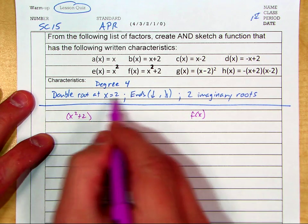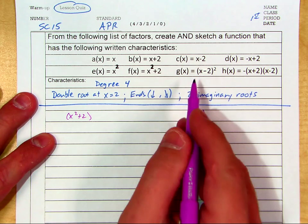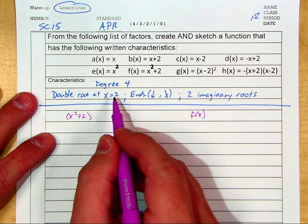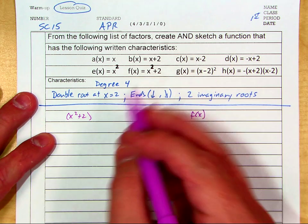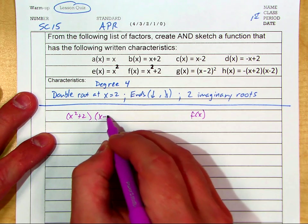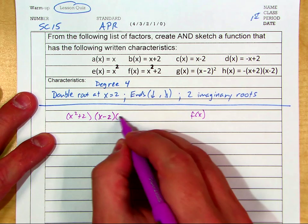I also want a double root at x equals 2, so I need to pick two functions up here that both have a root at x equals 2. Well, I'm going to pick c and d. So c has a root at 2, and so does d because of that negative sign thing, the one we talked about.